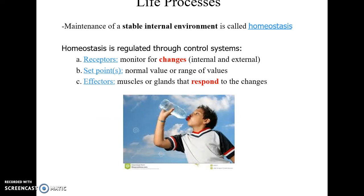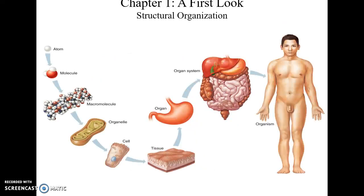Life processes are usually linked to the maintenance of a stable internal environment, which is called homeostasis. This is especially key to responsiveness — we have receptors that monitor for changes inside or outside the body, which then get processed in the brain to compare the value to what is ideal. If there is too much variance, effectors are signaled to respond and return us to the ideal condition.